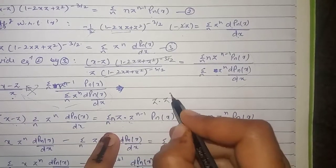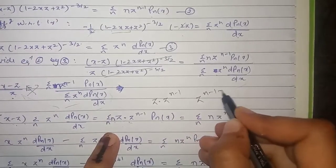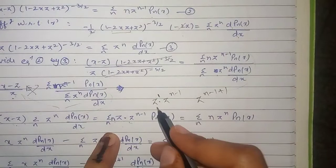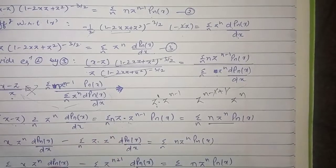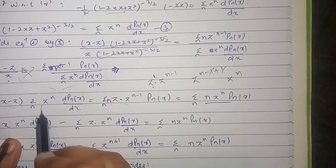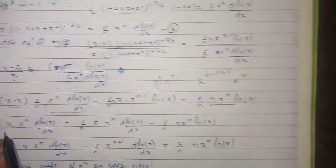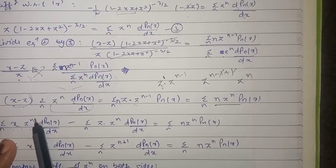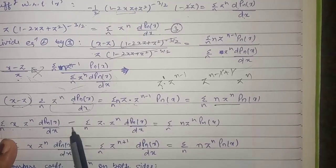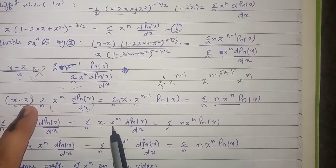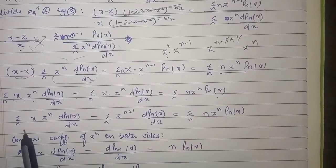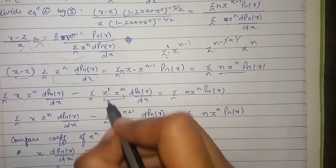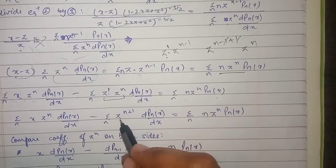Multiplying z by z^(n-1) gives z^n. Expanding the left-hand side bracket gives: Σ x·z^n·P'n(x) - Σ z^(n+1)·P'n(x) = Σ n·z^n·Pn(x).